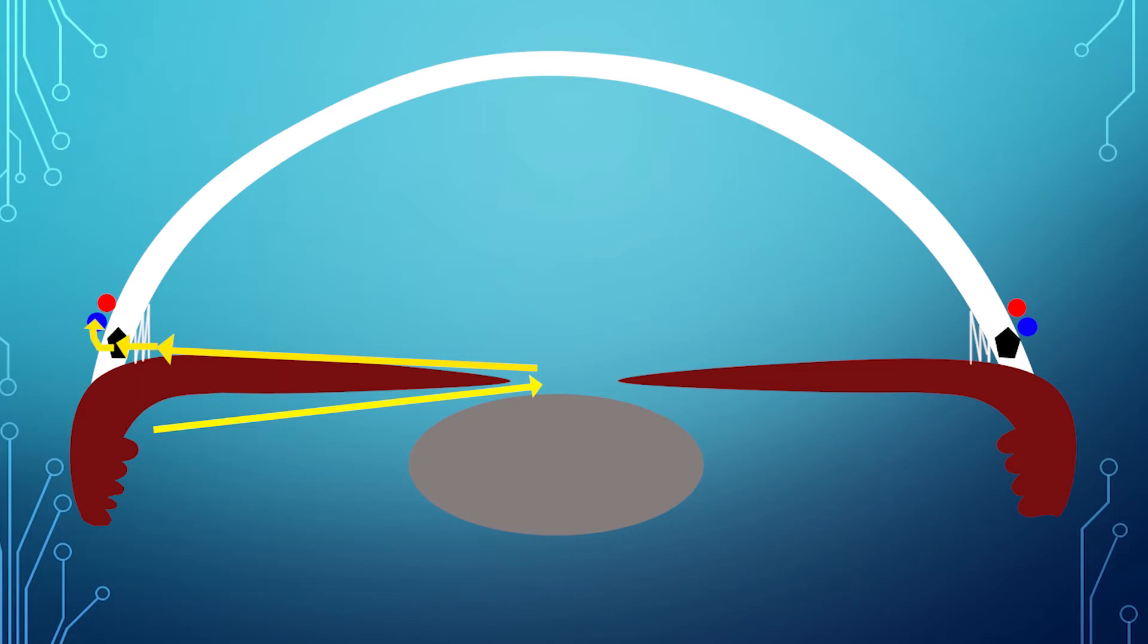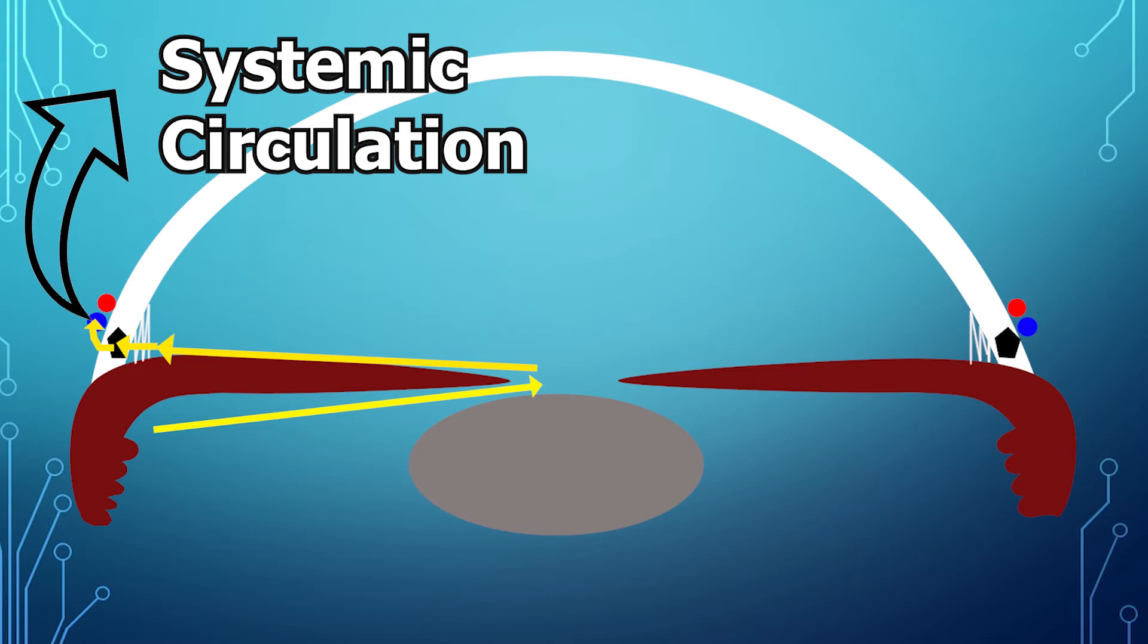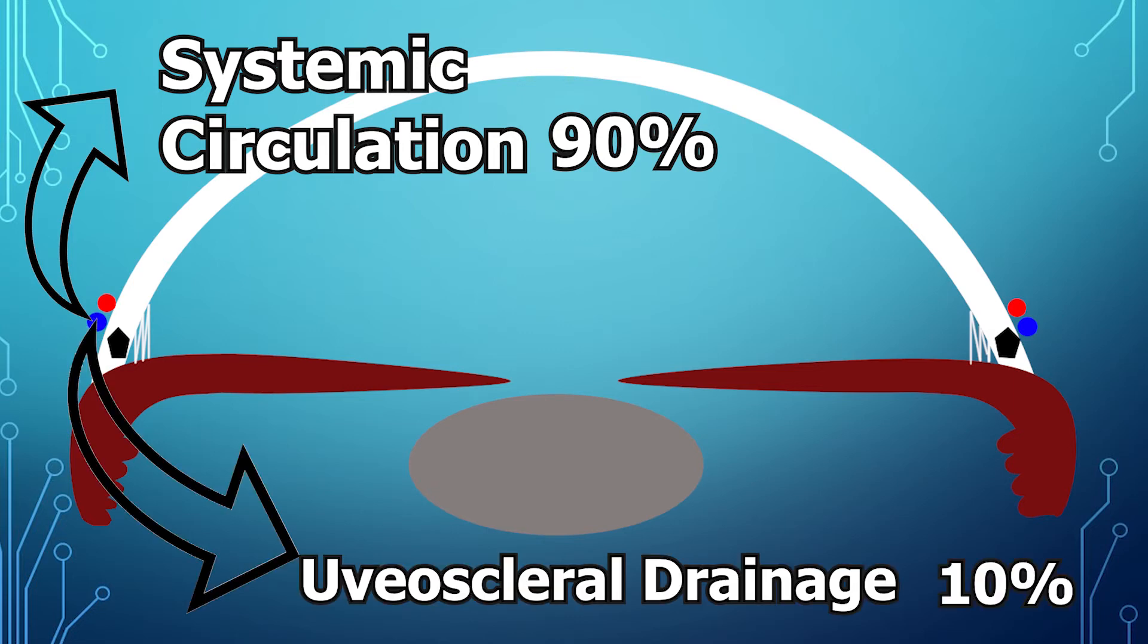Which takes it to the episcleral vessels, which dumps it back into the systemic circulation. And that accounts for about 90% of the aqueous humor drainage, and the other 10% is drained via either the uvea or the sclera.